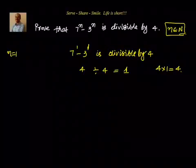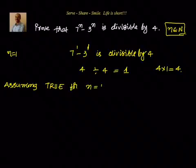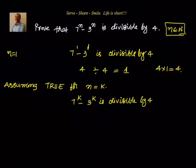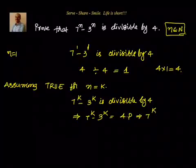The second step as part of proving by mathematical induction is assuming true for n equal to k. We assume 7 power k minus 3 power k is divisible by 4, that means 7 power k minus 3 power k is equal to 4 into p. From that, we can get 7 power k equal to 3 power k plus 4 into p, because we will be using that after some time.